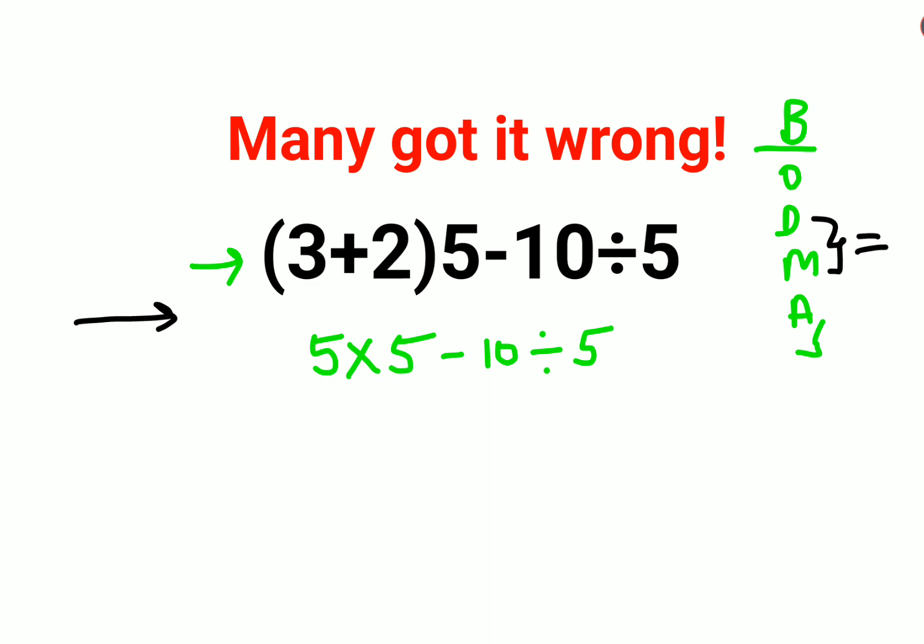So 5 times 5 gets you 25 minus 10 divided by 5, that gets you 2. So here the answer comes out to be 23. I hope this is very clear to everyone.